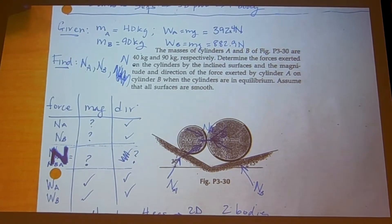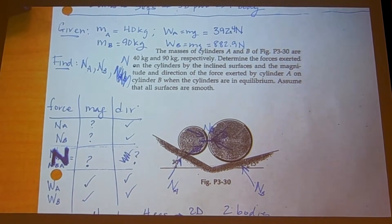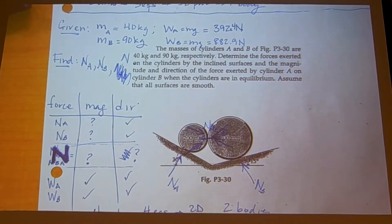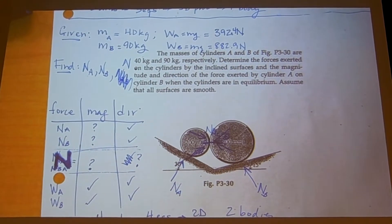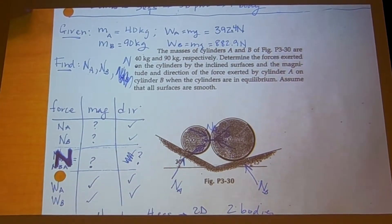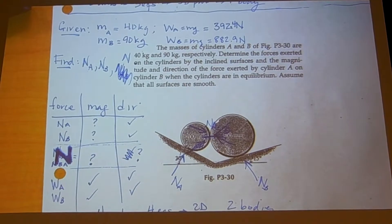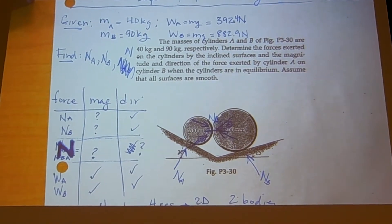So we have how many unknowns? Four unknowns. How many equations do we need? Four equations. How many bodies? Two bodies.